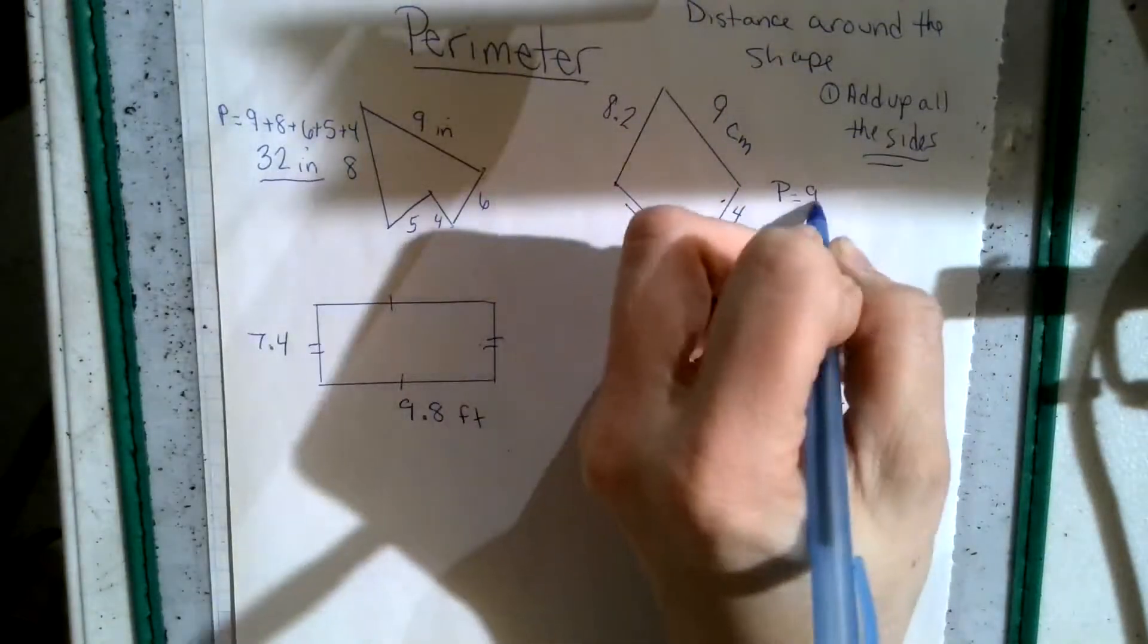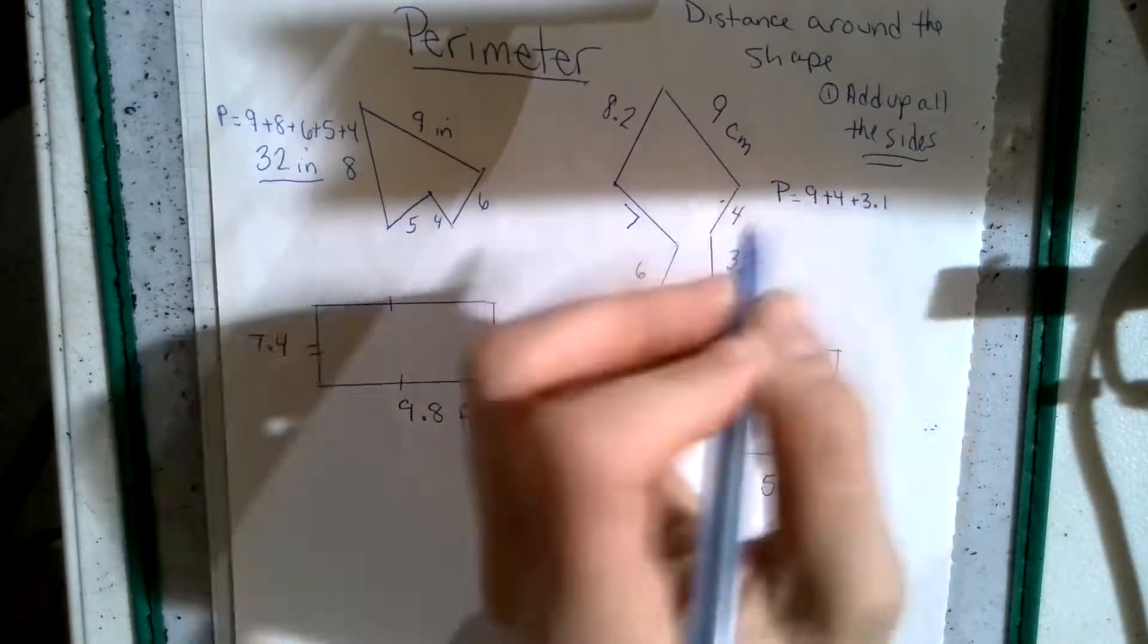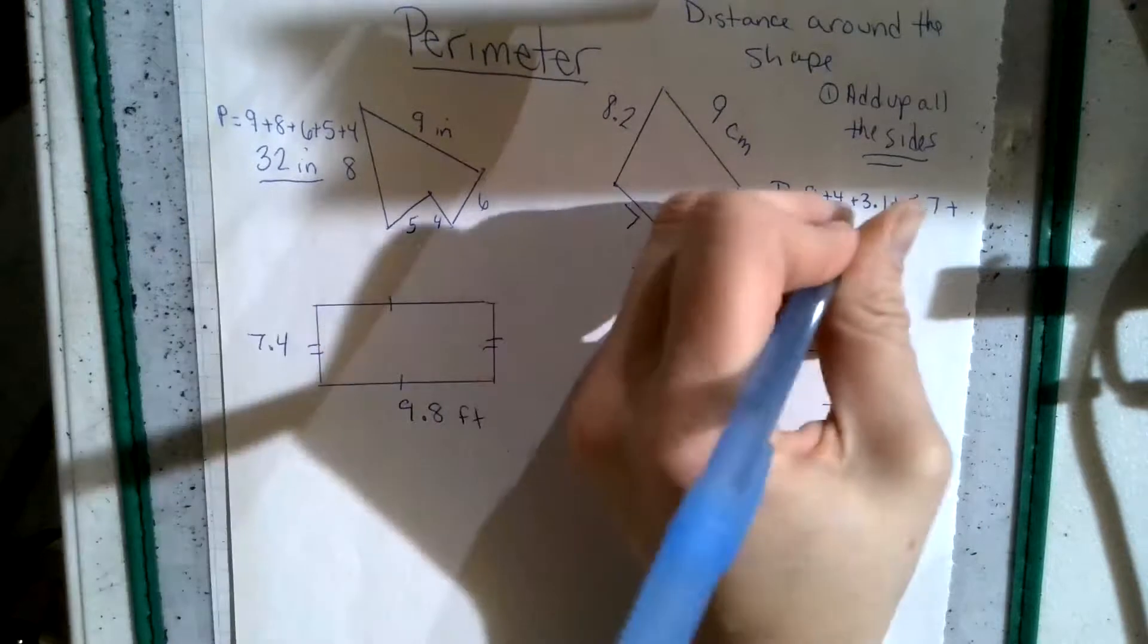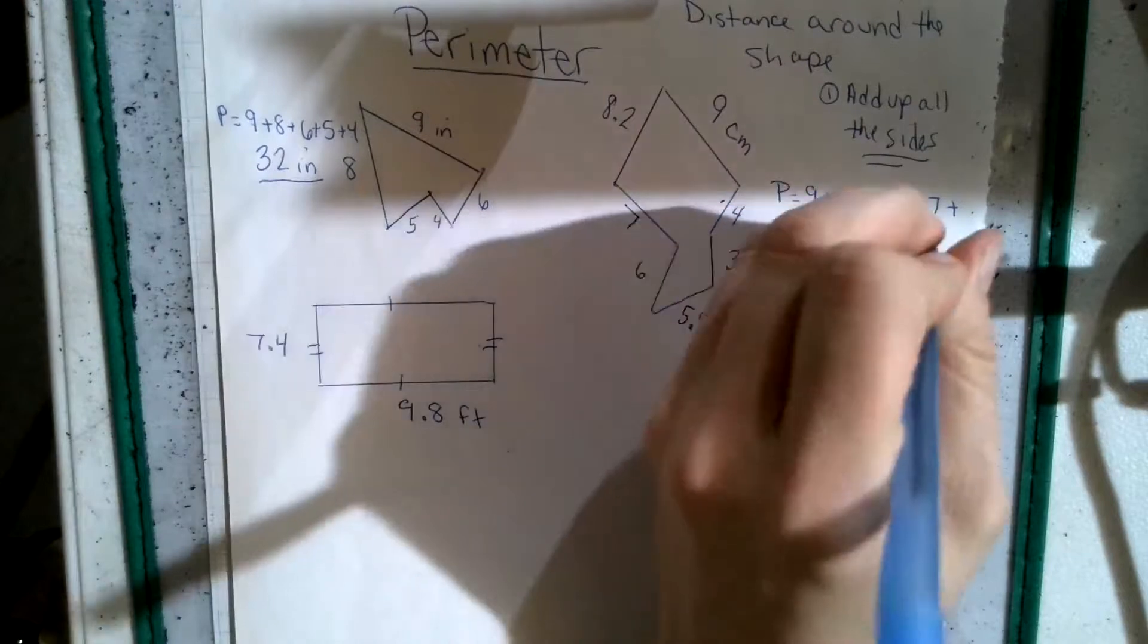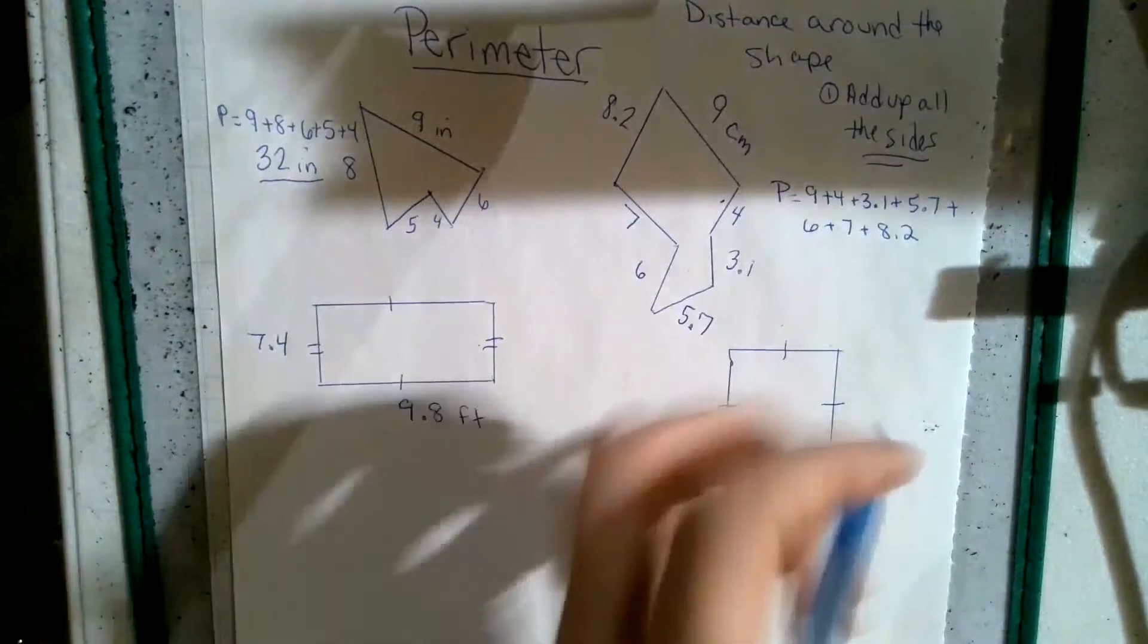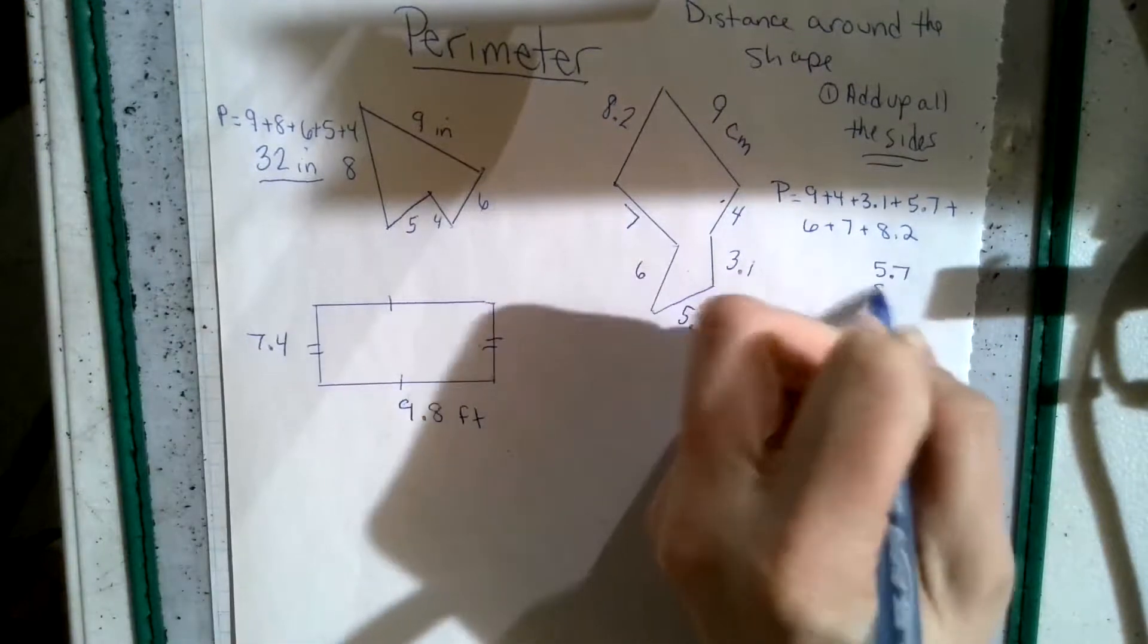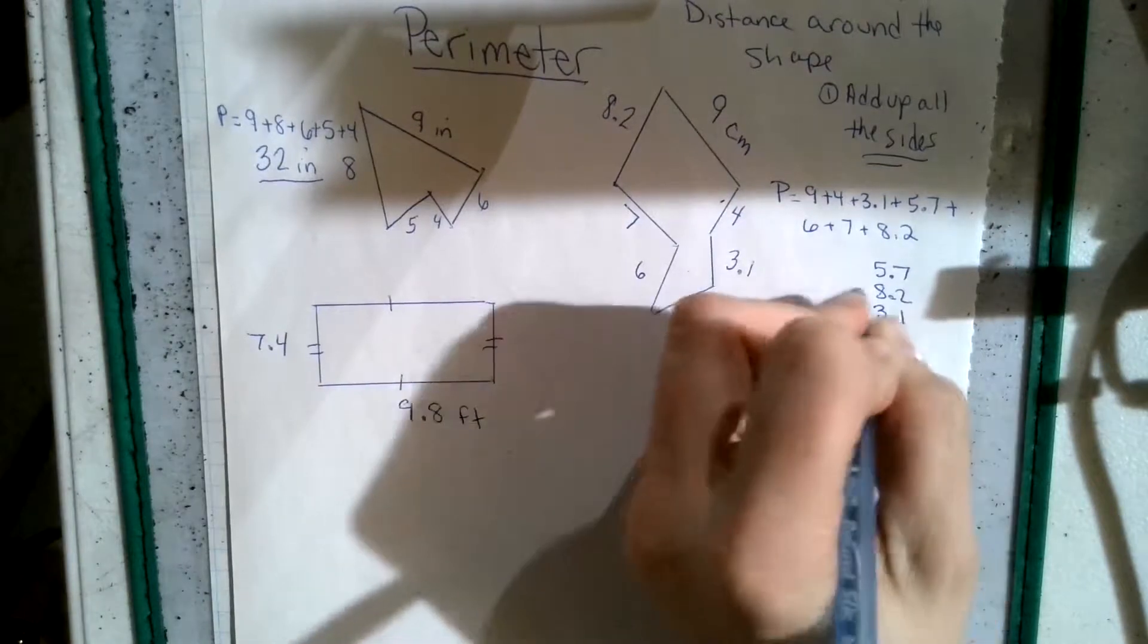So we have perimeter equals 9 plus 4 plus 3.1 plus 5.7 plus 6 plus 7 plus 8.2. So that's 1, 2, 3, 4, 5, 6, 7. So we have all that. So now we start adding them up. When there's whole numbers and decimals involved, I make it a little bit easier on myself. I take the decimals and I get a total like that.